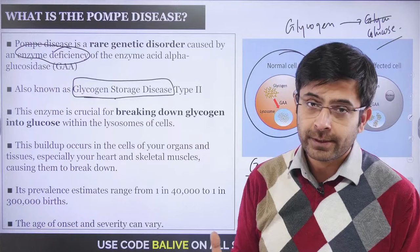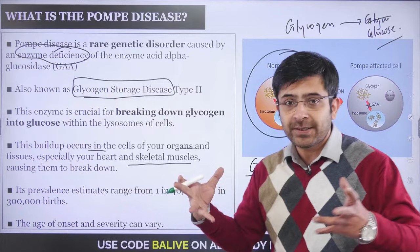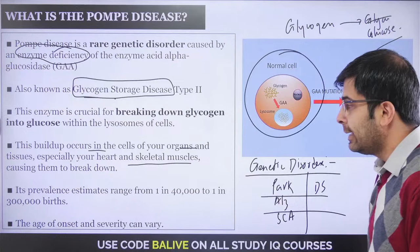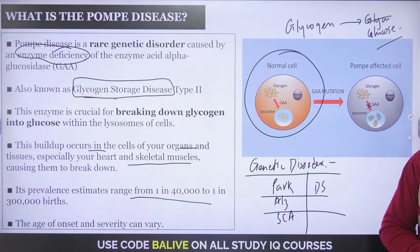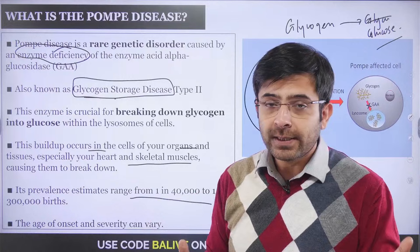Because of this buildup, pressure builds up and eventually organ failure is the most likely cause of death in a patient suffering from Pompe disease. Its prevalence is extremely rare — 1 in 40,000 to 1 in 3 lakh births. There are two forms: infantile Pompe disease, where a newborn shows symptoms, or late onset, which can come later in life.